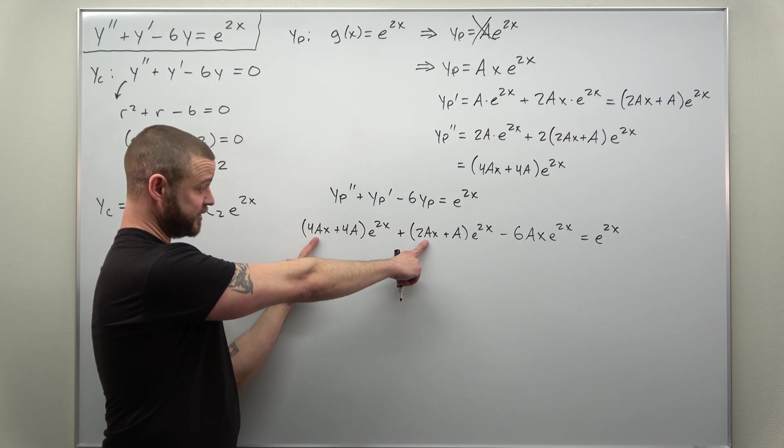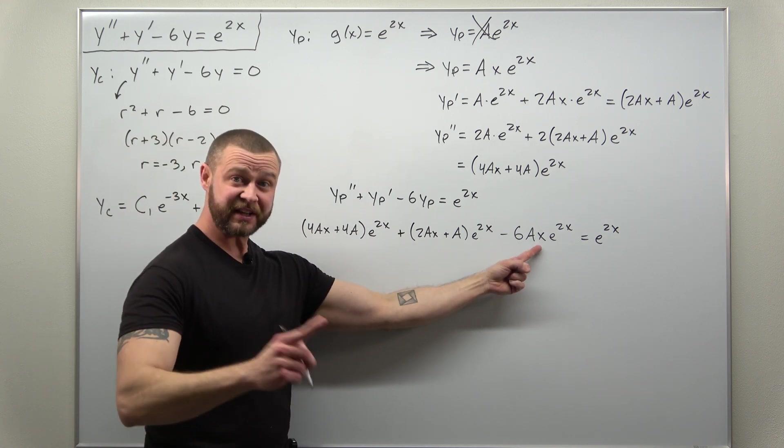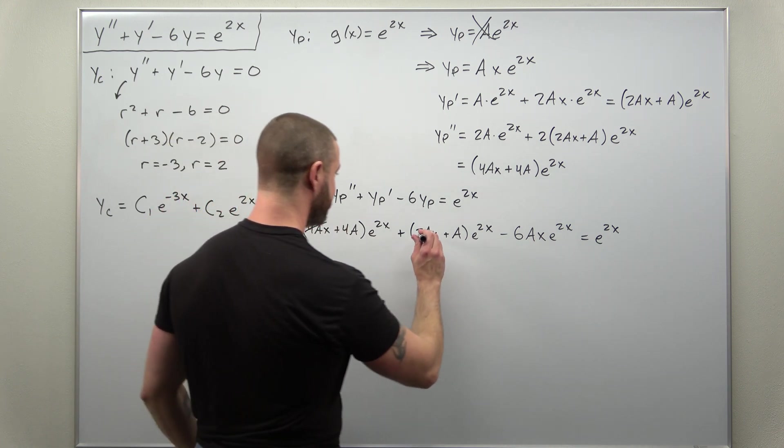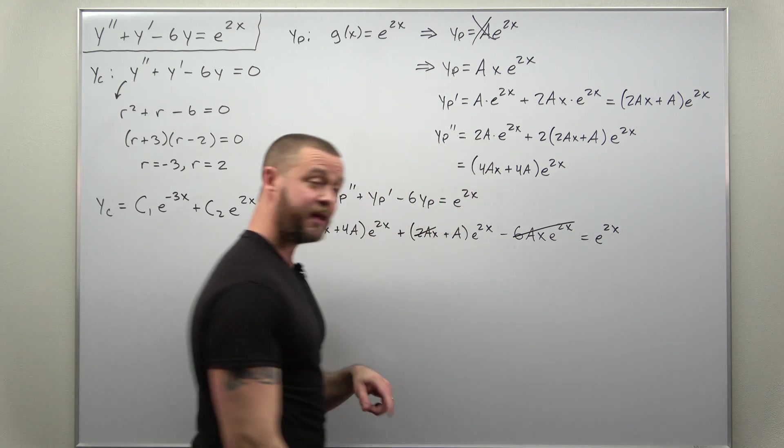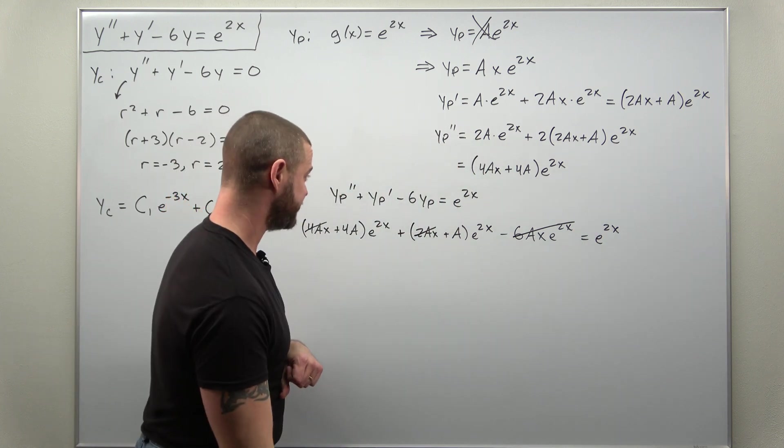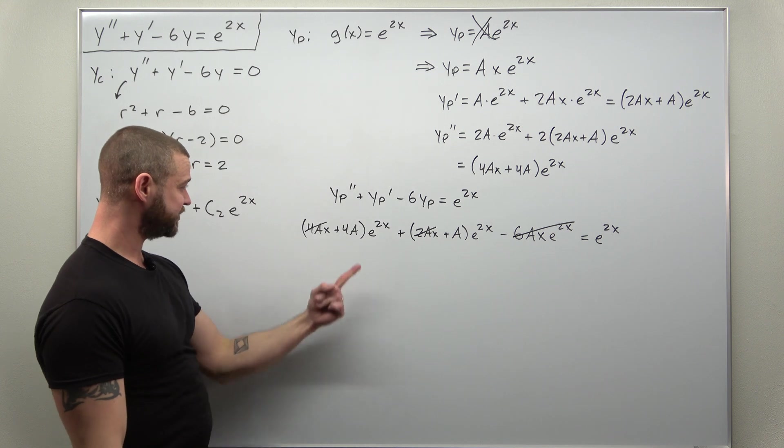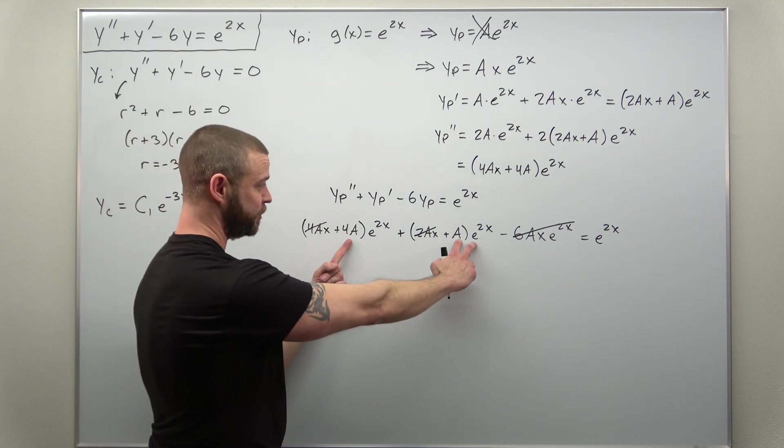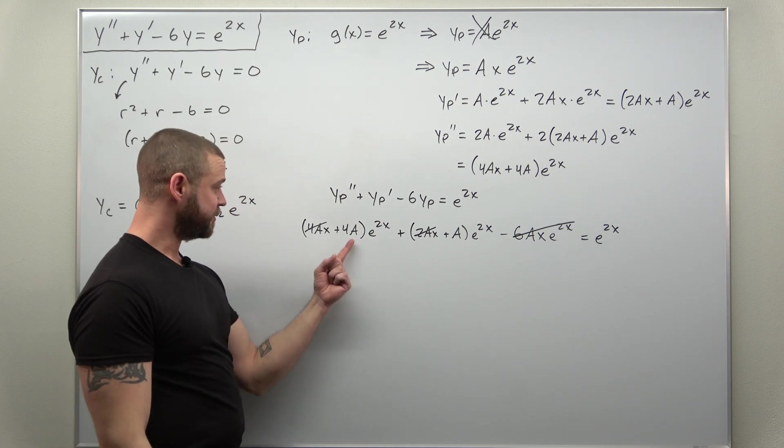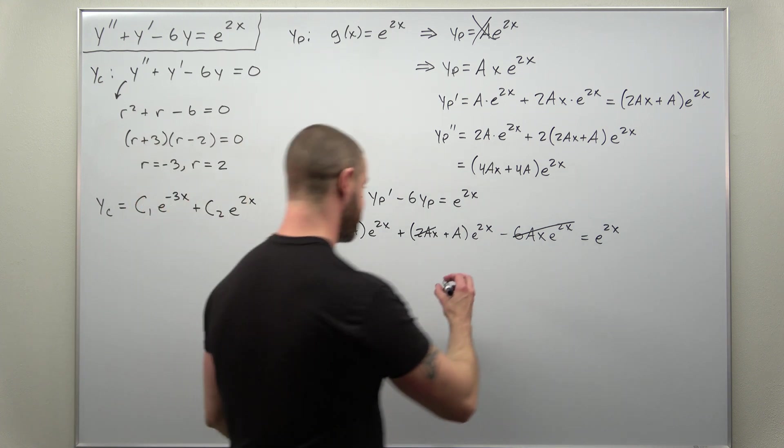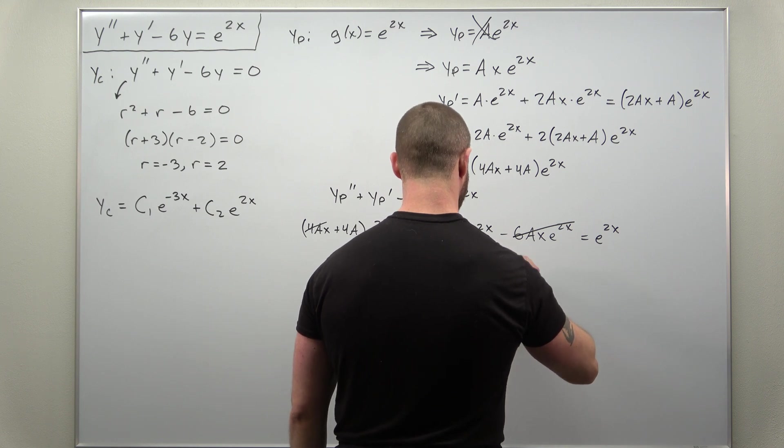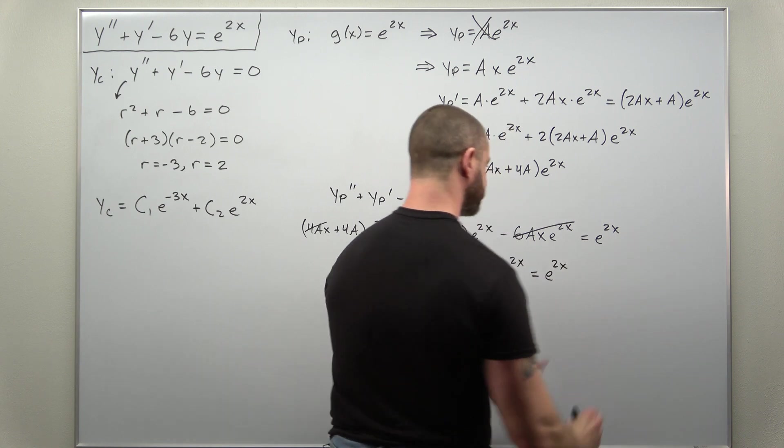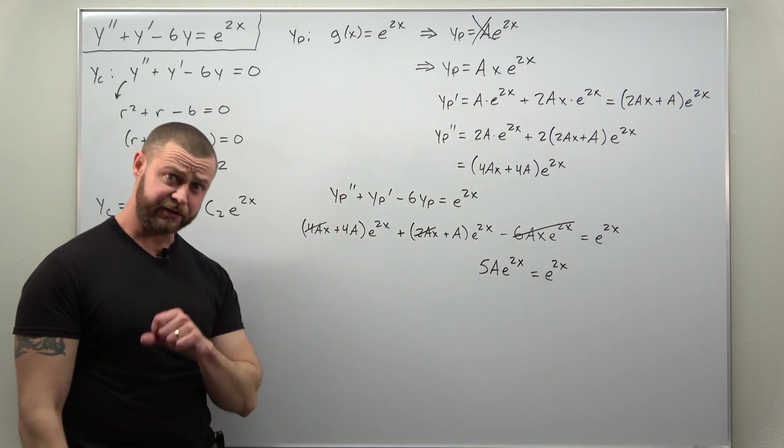So 4A and A gives you 5Ae^(2x). And that should equal the right-hand side e^(2x).